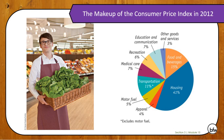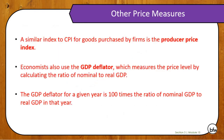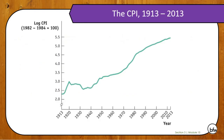Here's that same chart. You can see housing is in there, clothing, motor fuel, other transportation costs, medical care, recreation, education, communication, food and beverages, and other goods and services. As you can see, the CPI has increased over a period of time. The base year for the CPI is between 1982 and 1984 — don't really know why they chose that, but that's what they've done.